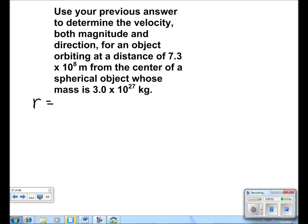In this problem, it says that we can use the previous answer, but let's just do it again for practice. We're given that the radius is 7.3 times 10 to the 8 meters, and we're also given that the mass is 3 times 10 to the 27 kilograms. We know the gravitational constant is 6.67 times 10 to the negative 11 newton meters squared per kilogram squared.